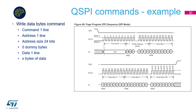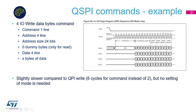Write operations offer more complexity as well. Here is a one-line write operation using command 0x02, which uses three phases: command, 24-bit address, and data — no dummy cycles are needed for write operations. The four-line write operation is almost the same but uses four lines instead of one for address and data.